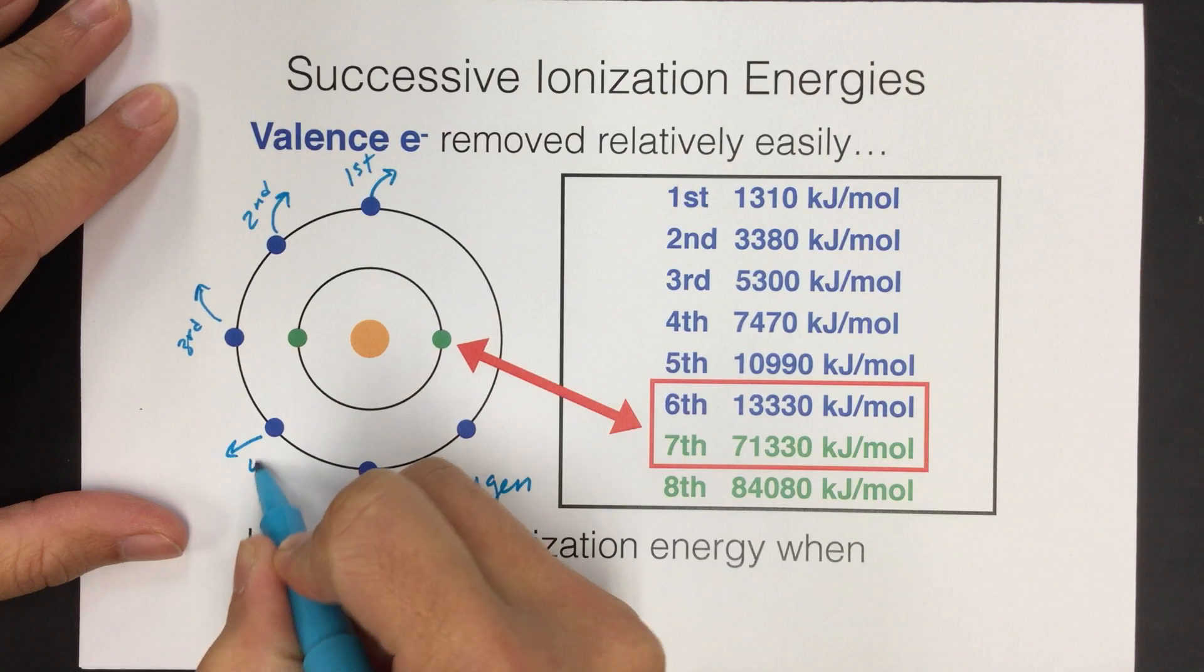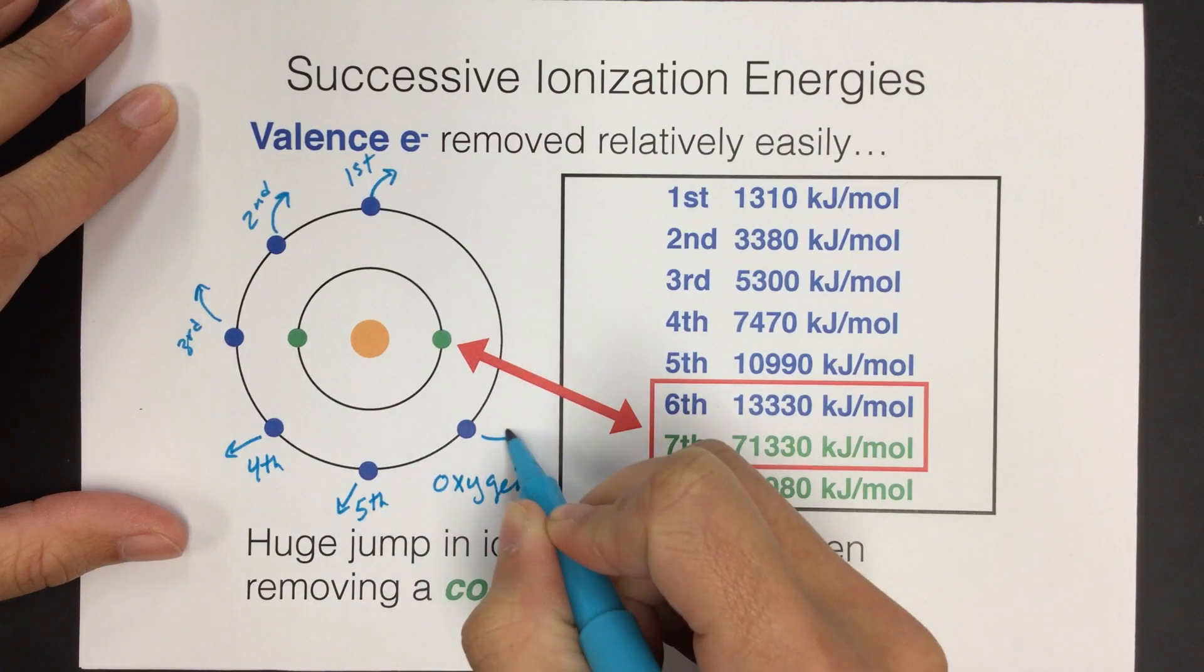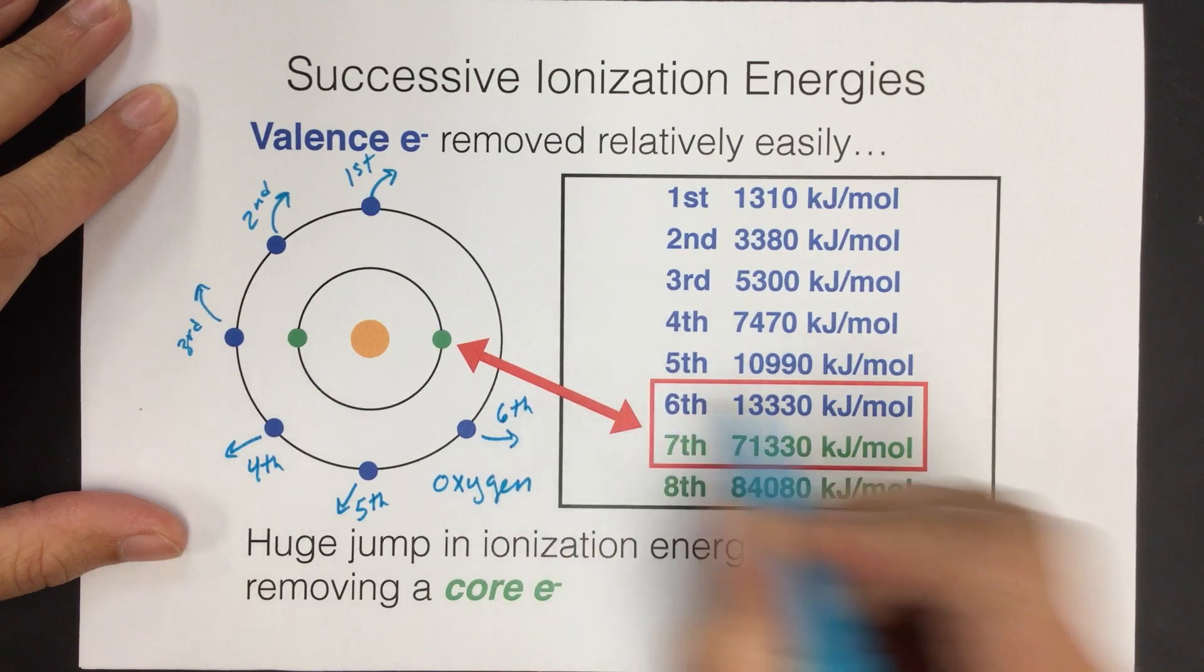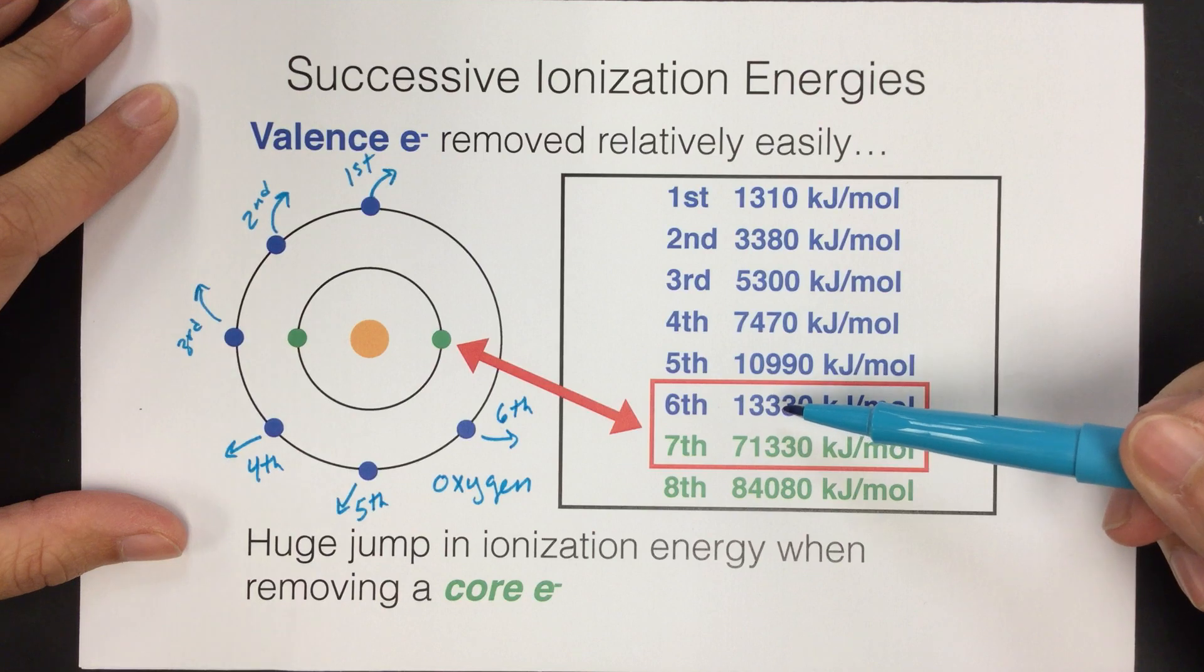I remove this one, and then this one, and then this one. And each time I keep removing electrons, the energy is increasing, right?